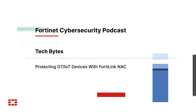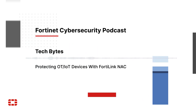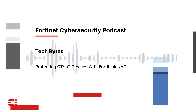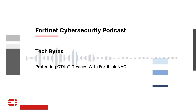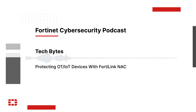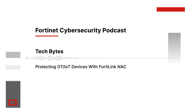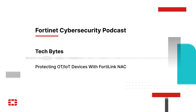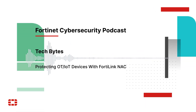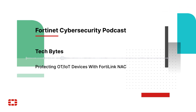Today on the Tech Bytes podcast sponsored by Fortinet, we talk about IoT and OT risks and how to mitigate them. One option from Fortinet is FortiLink NAC, a free feature that can help you segment and protect IoT and OT devices and can even help you deploy virtual patches. Another option is FortiNAC, a full-bore NAC solution. We'll get into the differences between the two offerings, how they work, and how to decide which one is a better fit for your network.